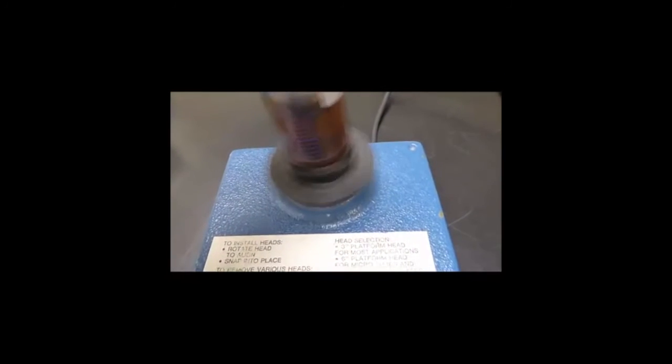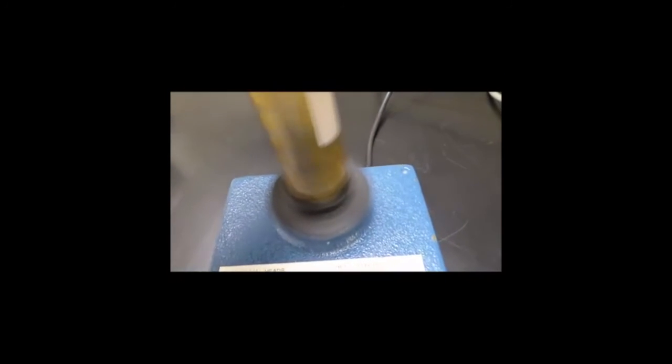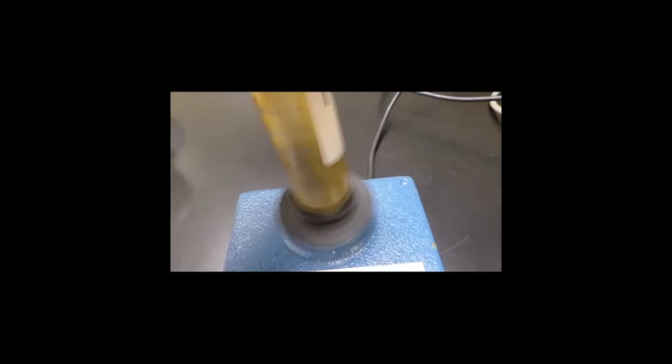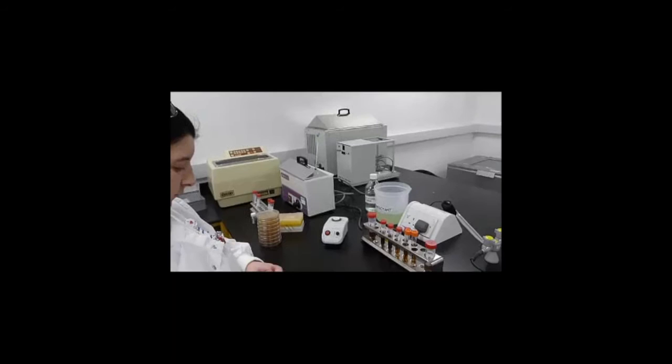Here we're using a vortex mixer to suspend the sedimented yeast cells so we can take representative samples to process for purification. Here's the view in the microscope showing a general mass of plant cell material, and here's the initial view of the microorganisms which are present. We can see some yeasts in the background, which gives us reassurance that we've got a useful sample. But there will be some bacteria in there as well, so we need to do some purification.